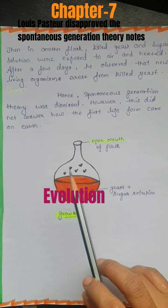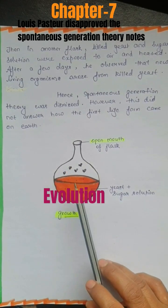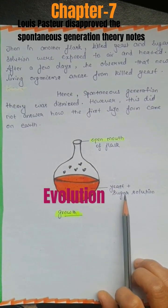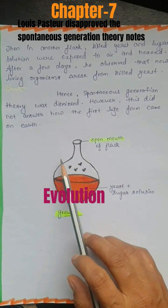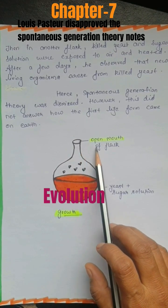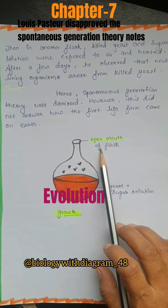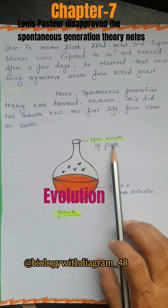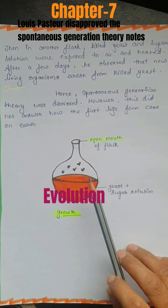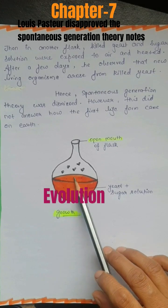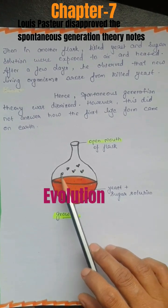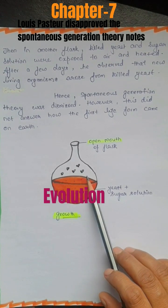Then he took another flask and put yeast and sugar solution in it, and the mouth of that flask was exposed — the mouth of this flask is open. Then after a few days, he observed that living organisms arose from the yeast.